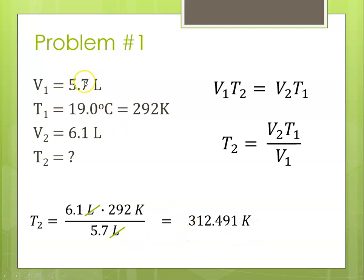Looking up here, 2 sig figs, 3 sig figs, 2 sig figs, 2 sig figs. Our second significant digit would be the 1. The number after it is a 2. The rule is 4 and below, you let it go. So this would round down to 310 degrees Kelvin.